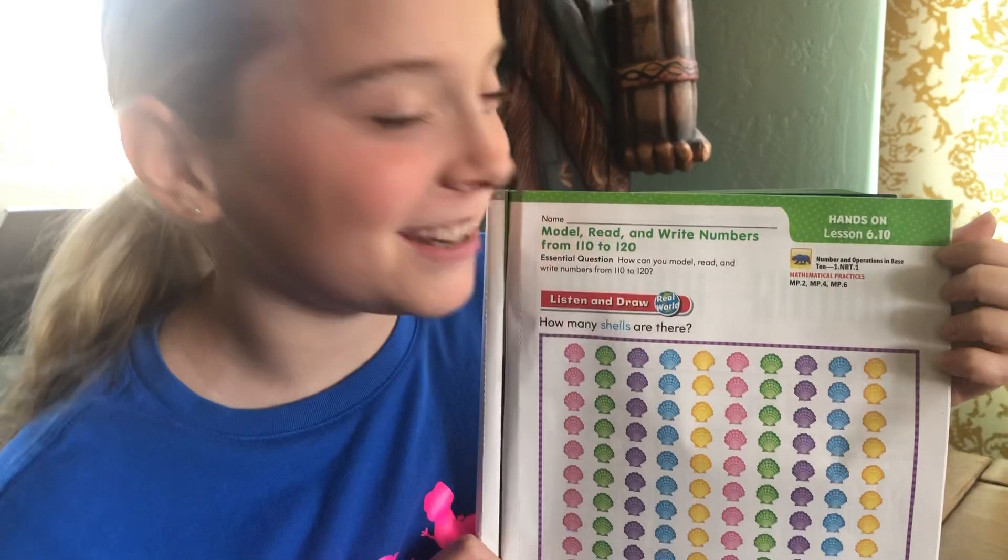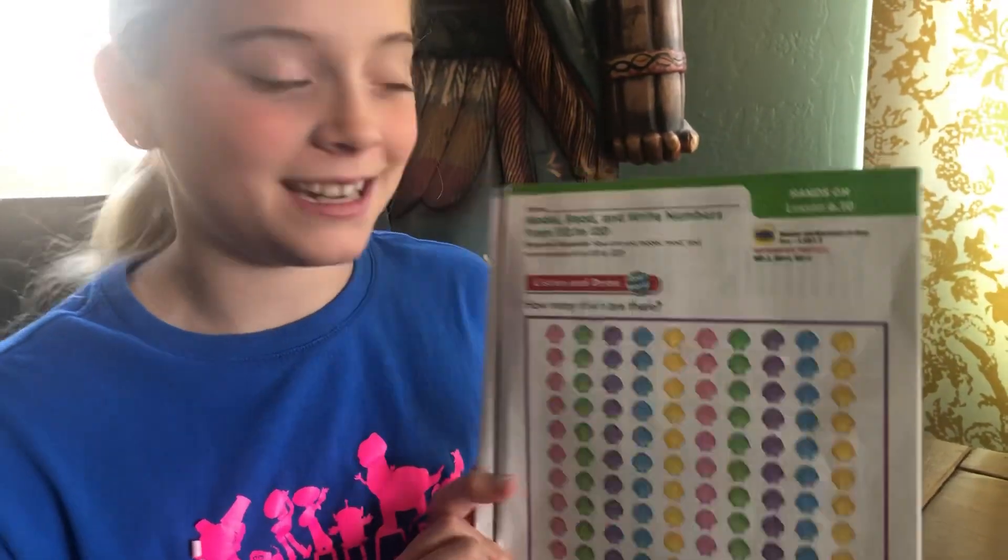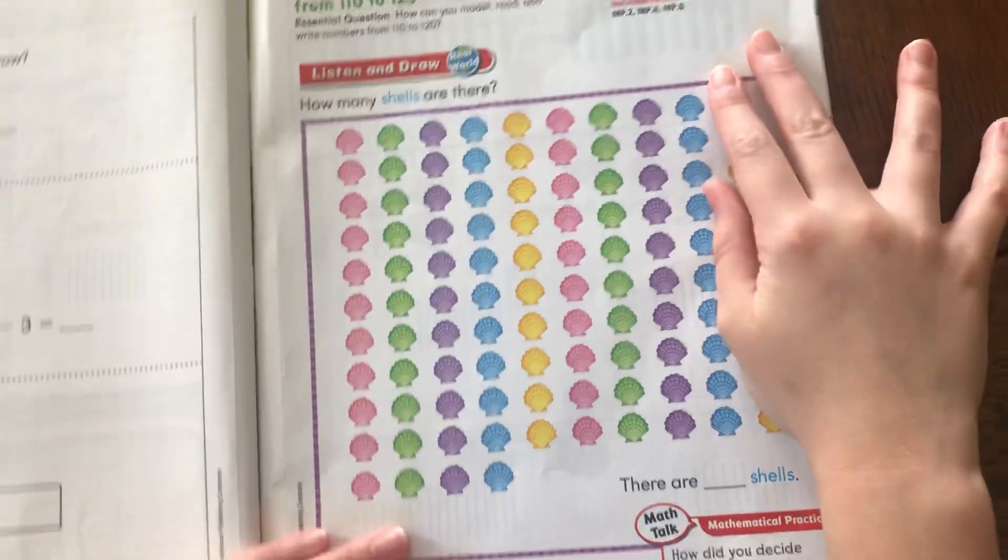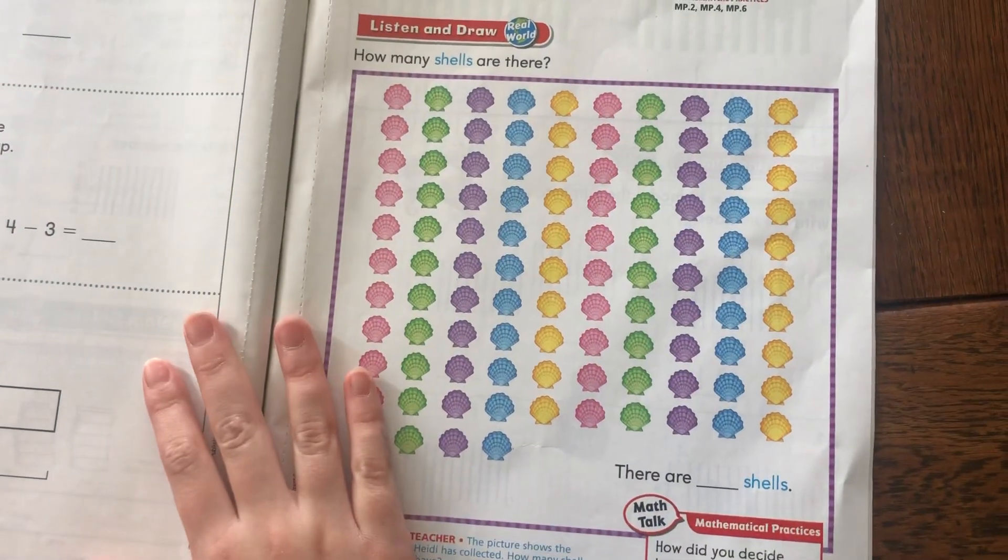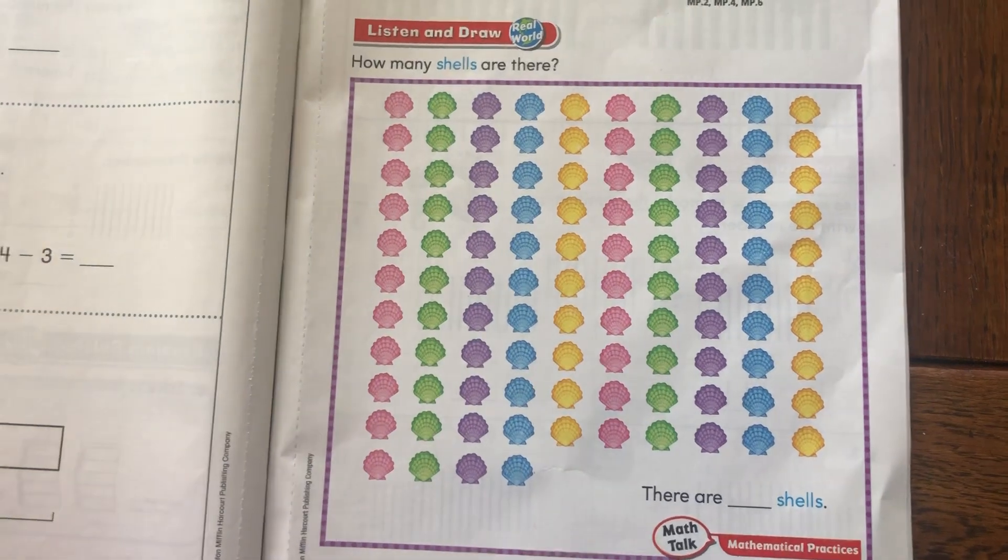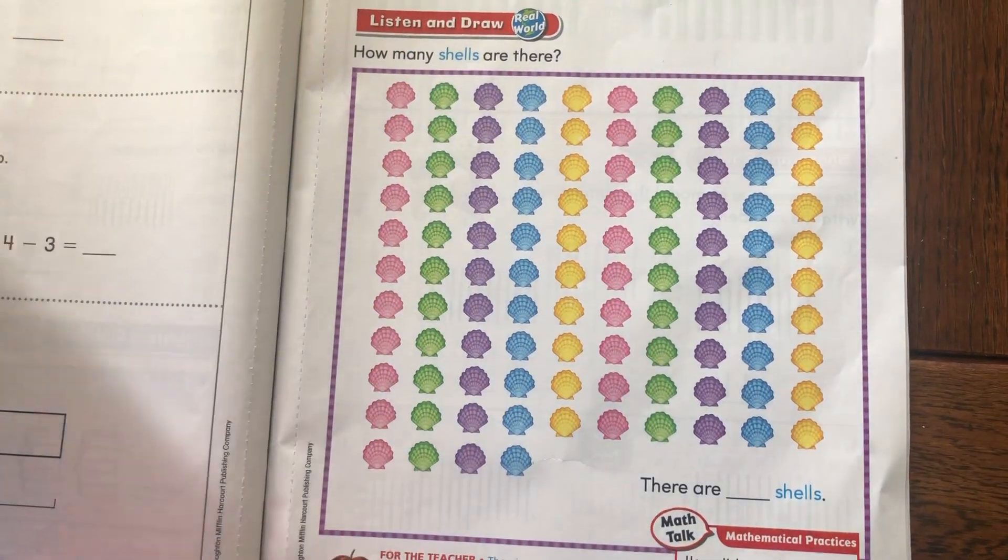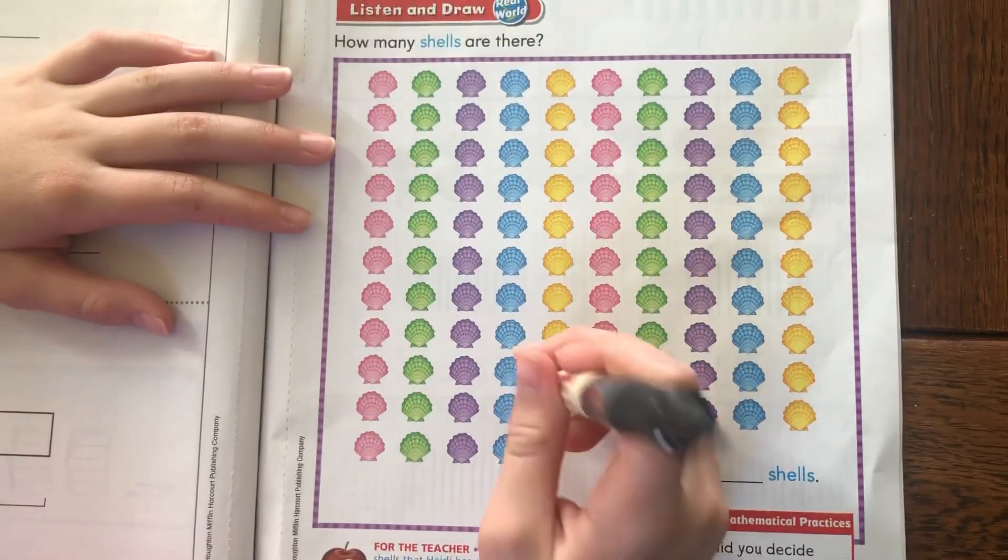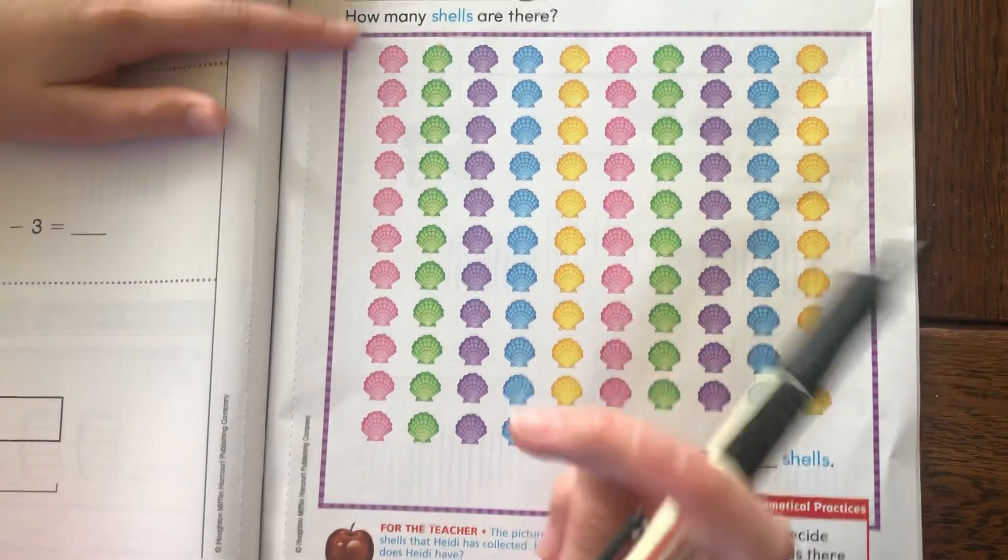And today, we are going to be doing Lesson 6.10. It says, how many shells are there? So, I don't want to count all of these shells, because that's going to take way too long, or my annoying brother's going to come. Or you could lose your place somewhere in the middle if the dog barks, or your annoying brother comes in. So, how about this?